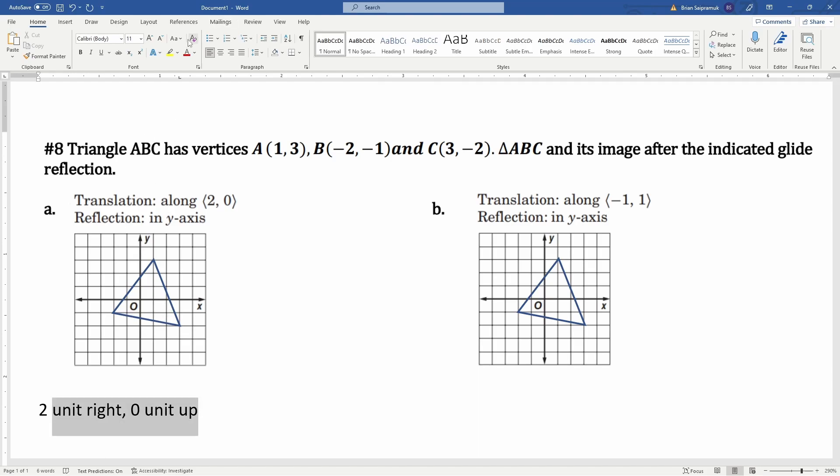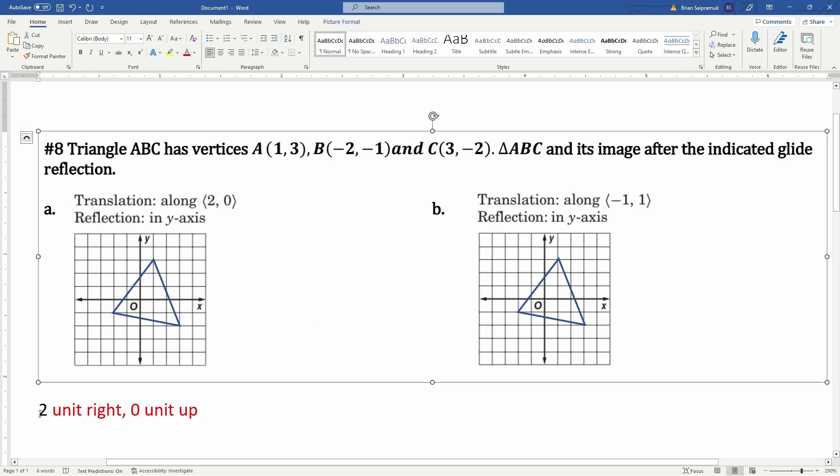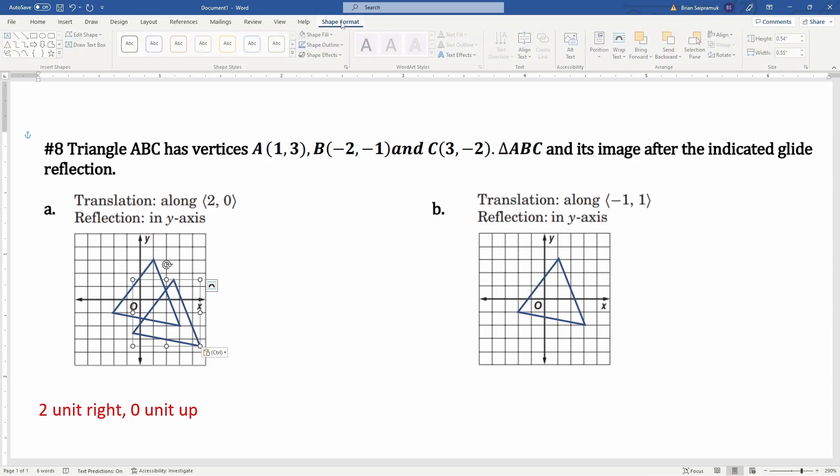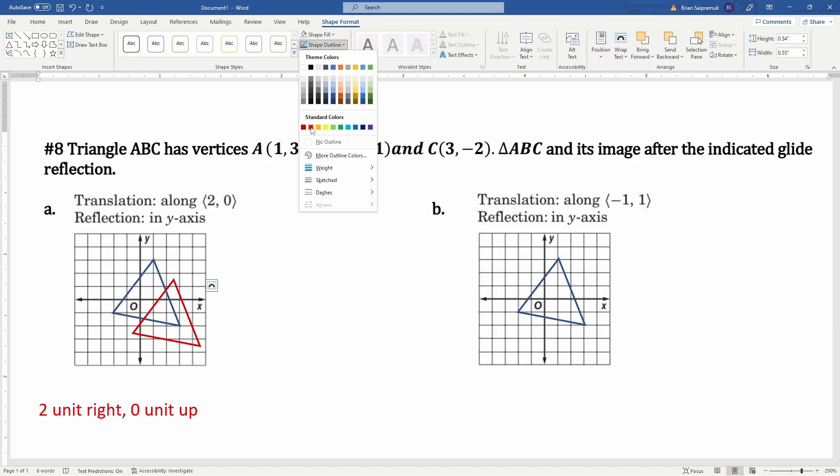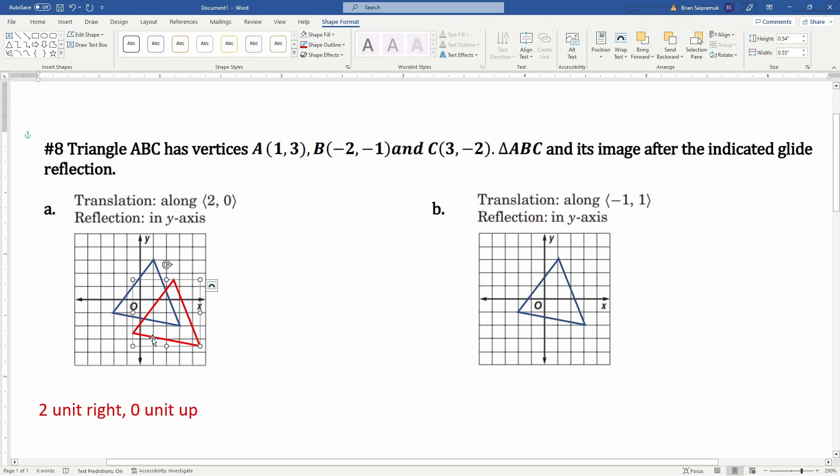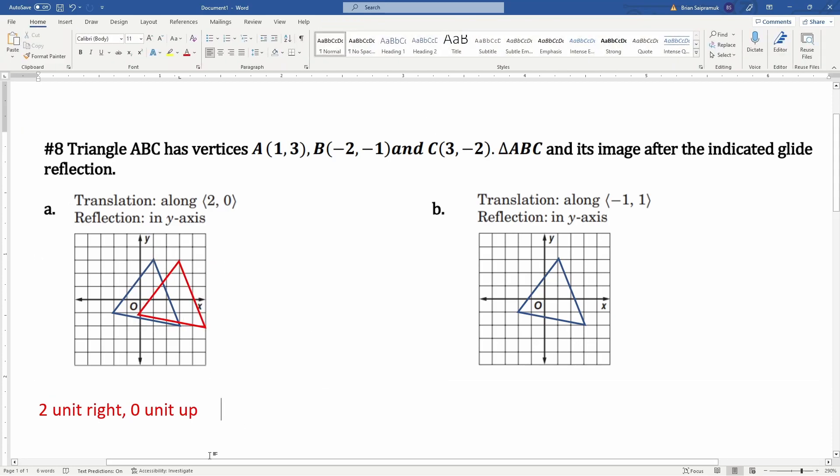So I'm going to make that in red. I'm going to grab this one but make it red, and I'm going to apply that transformation of two units to the right, one, two, there you go.